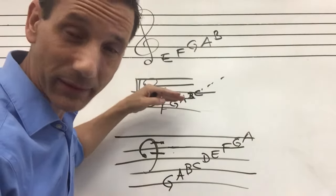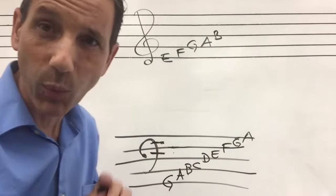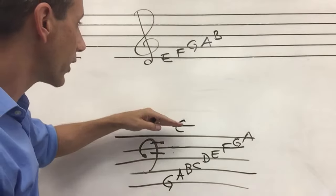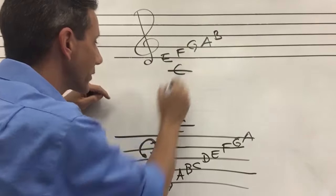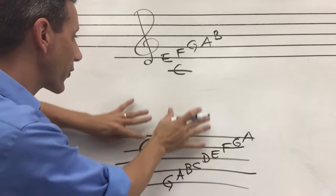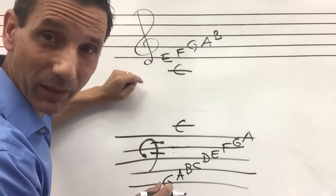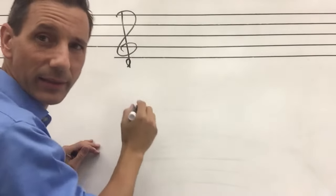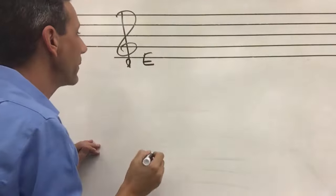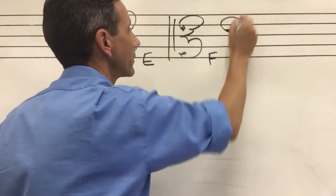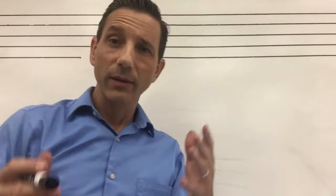This C happens to be middle C. Middle C is one ledger line — one extra little line — above the bass clef, and it's also one ledger line below the treble clef. These five lines could be moved up a little bit and this C, this C, and this C are all the same note — middle C on a piano. To review: the bottom line of treble clef is E, the bottom line of alto clef is F, and the bottom line of bass clef is G.